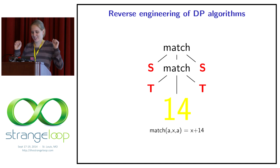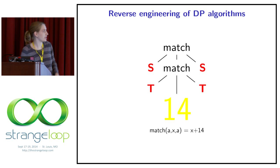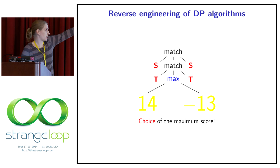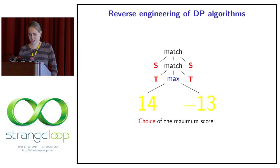Going one step further, another match appeared, and we can use the same equation to write it down — there seems to be a reoccurring thing. And some ST is at the side of some ST. Then going back a few more steps, there's something crazy happening: some divergence, there seems to be a choice. There's a maximum going on — on the left side we have 14, on the right side we have minus 13. So there's a choice going on of the maximum score.